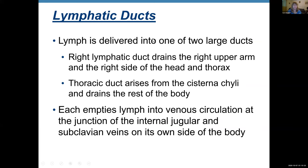The biggest vessels are ducts. Lymph is delivered into one of two large ducts: the right lymphatic duct and the thoracic duct. The right lymphatic duct drains the right upper arm and the right side of the head and thorax. The thoracic duct drains everything else — it arises from the cisterna chyli and drains the rest of the body. Each empties lymph into the venous circulation at the junction of the internal jugular and subclavian veins on its own side of the body.